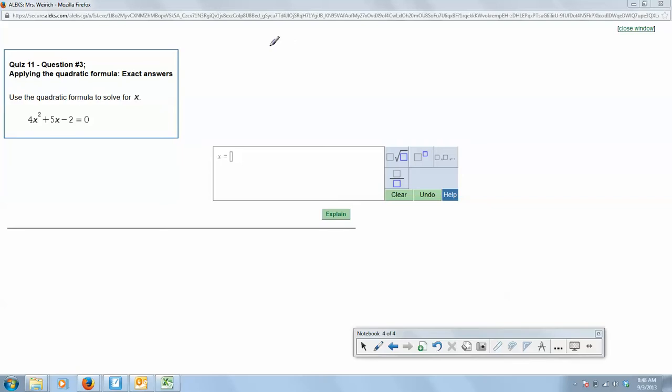We're given the quadratic formula on our formula sheet, but just as a reminder, it's x equals negative b plus or minus the square root of b squared minus 4ac all over 2a. That's a reminder that the form is always ax squared plus bx plus c.